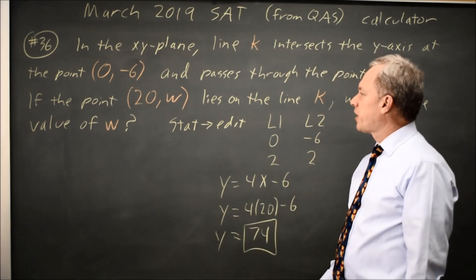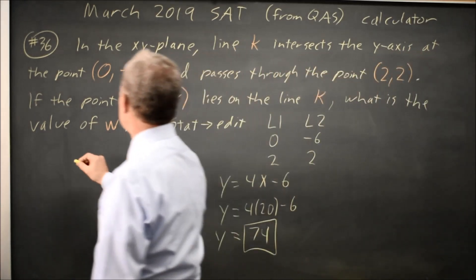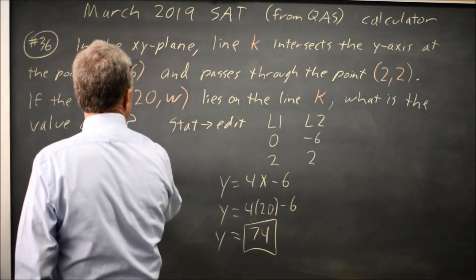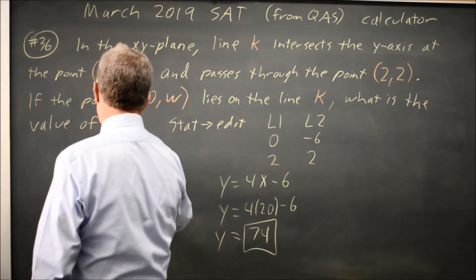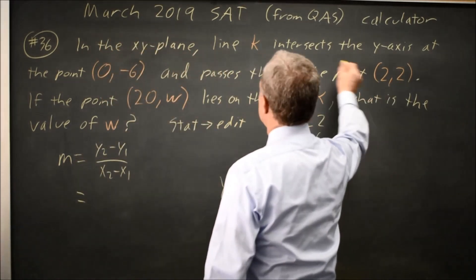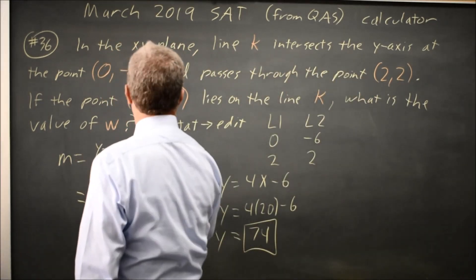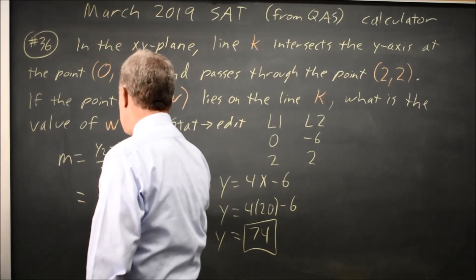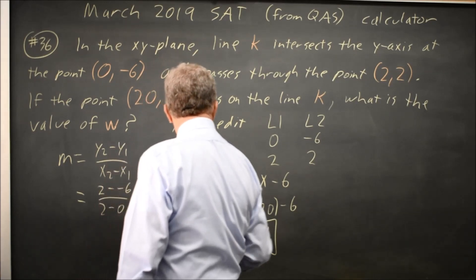I can also do this by hand. I wouldn't in the interest of time but I could. The slope of my line is y2 minus y1 over x2 minus x1 which is my y coordinates are 2 and negative 6, my x coordinates are 2 and 0, so that's 8 over 2 equals 4 which is the slope I found here.